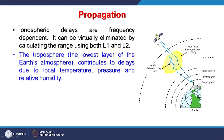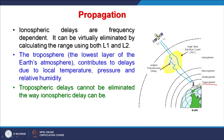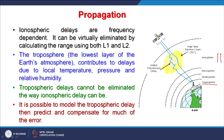The troposphere is the lowest layer of the Earth's atmosphere and contributes delay due to local temperature, pressure, and relative humidity. These conditions keep changing — in cloudy conditions, temperature, pressure, and relative humidity may be different and may bring additional delays in signals received by a receiver. Tropospheric delays cannot be eliminated the way ionospheric delays can using L1 and L2, because those are frequency dependent. However, by employing a model, these delays can be minimized based on certain predictions — it is possible to model the tropospheric delay, predict, and compensate for much of these errors.